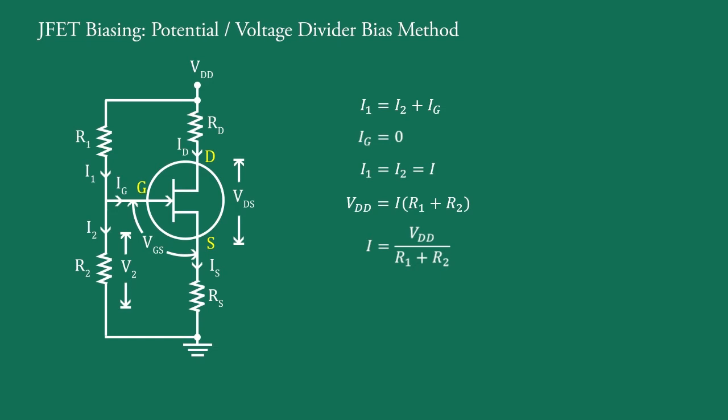Therefore, voltage across R2 is V2 equal to I into R2. Substituting for I from this equation, we get V2 equal to VDD into R2 upon R1 plus R2.